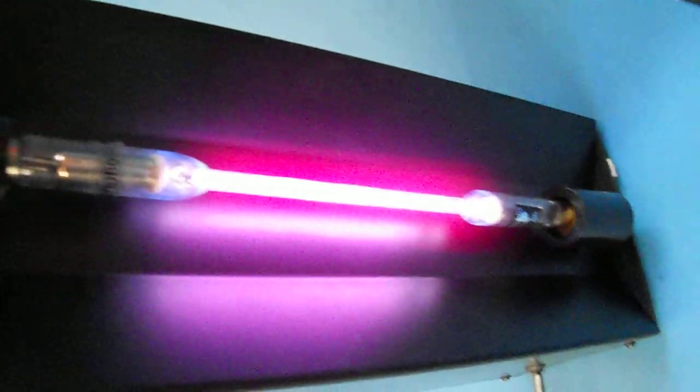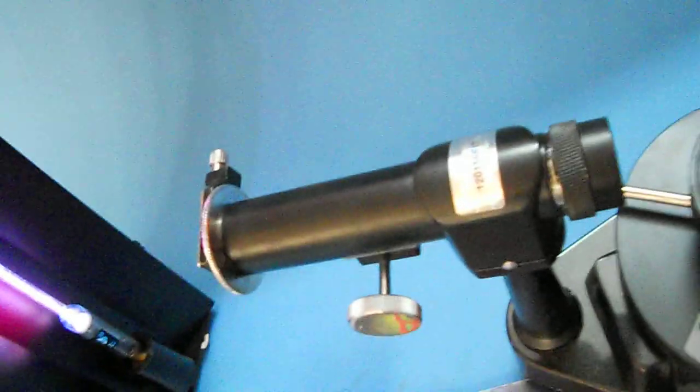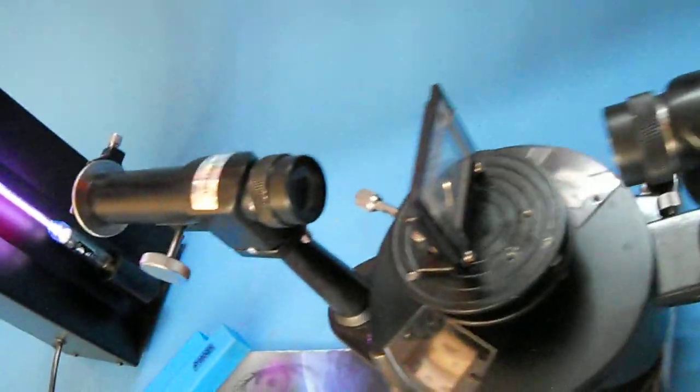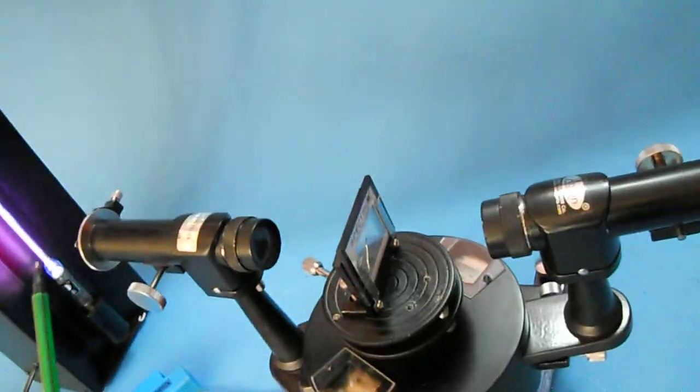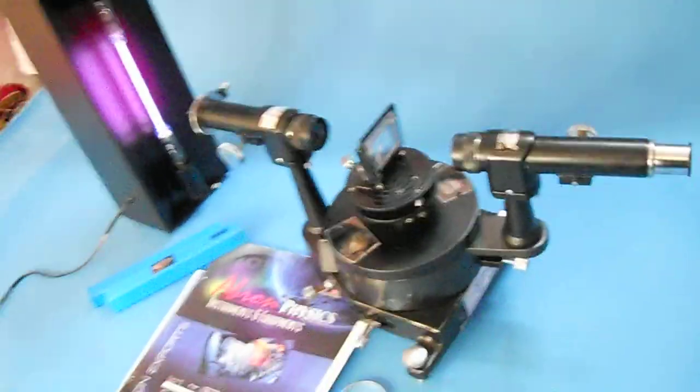There is a discharge tube which is a hydrogen gas discharge tube. When you focus this, there is a diffraction grating. When you focus the gas tube through the telescope and collimator, you can see the lines of the hydrogen gas and study the Rydberg constant.